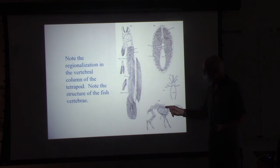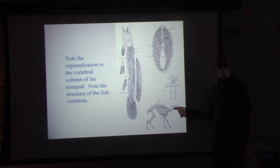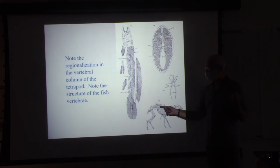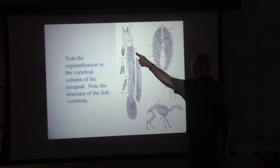Mammals have regionalized the vertebral column. Mammals have cervical, thoracic, lumbar, sacral, and caudal. Reptiles have cervical, trunk, sacral, and caudal. Fish just have trunk.